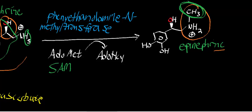Whenever you transfer a methyl group from S-adenosylmethionine, your product is always S-adenosylhomocysteine, and that goes back into the SAM cycle to regenerate SAM. SAM — S-adenosylmethionine, Adomet — is very important for biosynthesis. Phenylethanolamine N-methyltransferase is what gives us epinephrine.